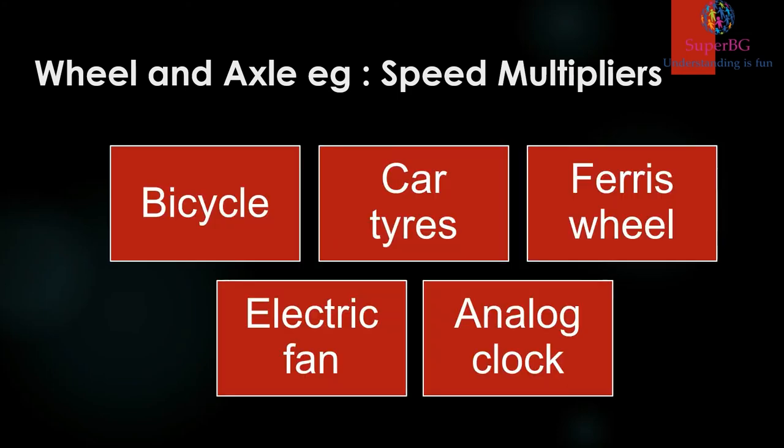Examples of speed multipliers: bicycle, car tires, ferris wheels, electric fans and analog clocks.